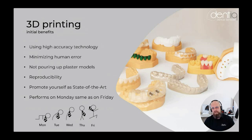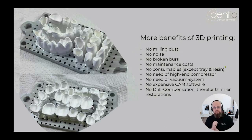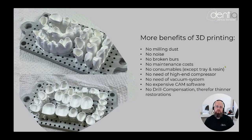Comparing 3D printing with milling technology or plaster models, there are additional benefits: no milling dust, no noise, no broken burs, essentially no real maintenance cost, and no significant consumable costs beyond trays and resins. We don't need a high-end compressor, a vacuum system, or expensive CAM software — it's usually included with the printer or available as a small subscription.